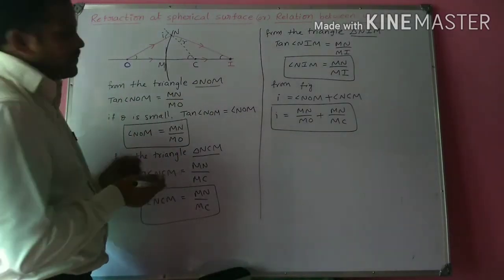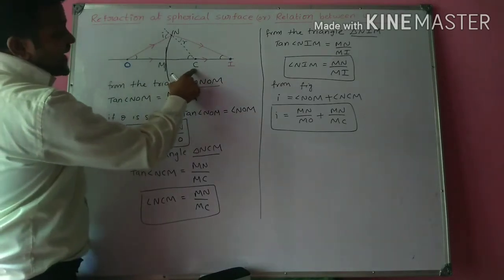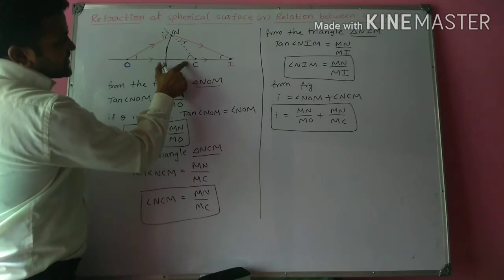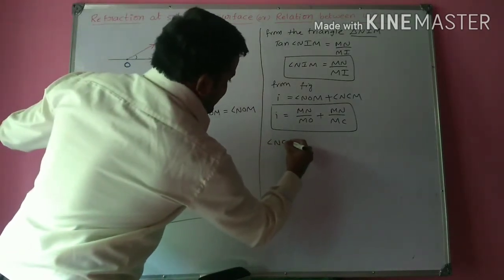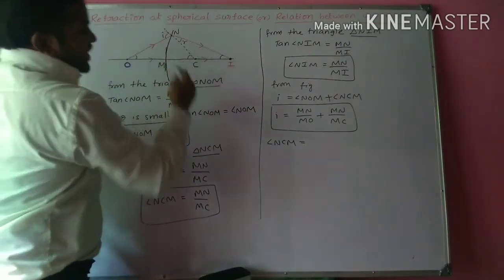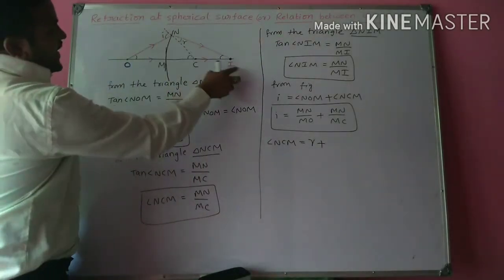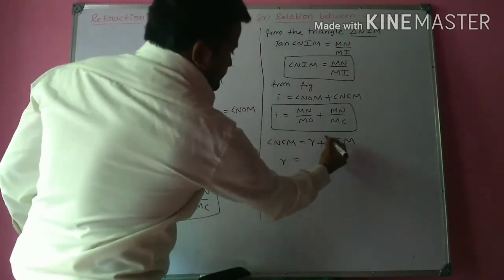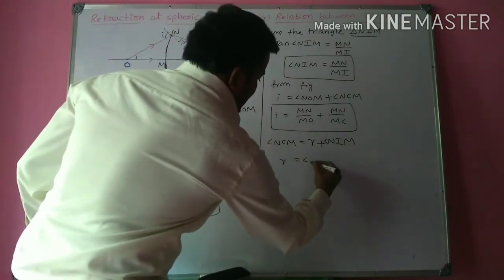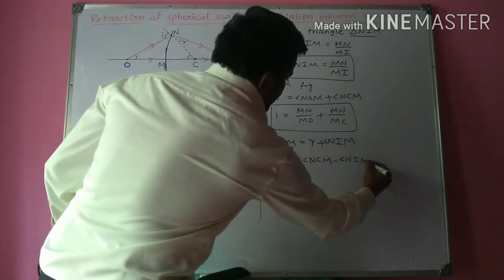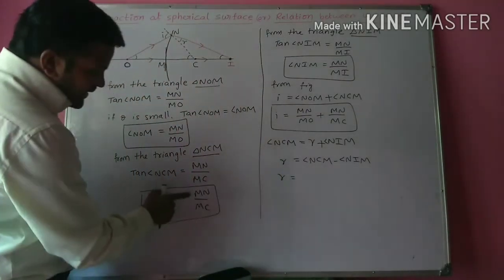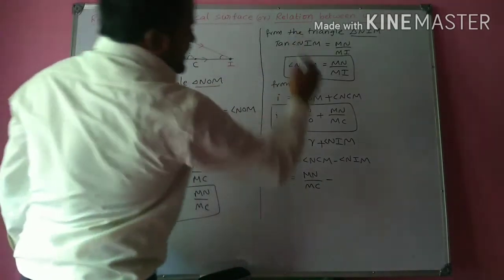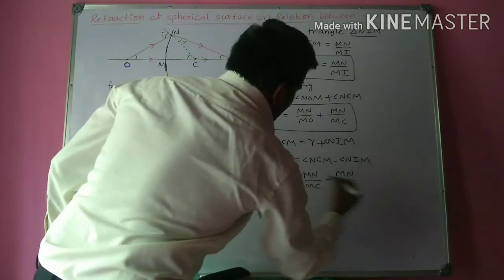Similarly, angle NCM is the exterior angle for the two interior angles R and NIM. So angle NCM equals R plus NIM. Rearranging, R equals angle NCM minus angle NIM. Substituting the values, R equals MN by MC minus MN by MI. This is the value of R.